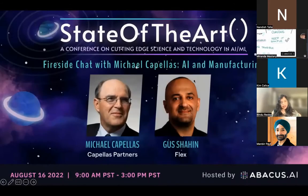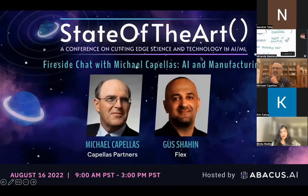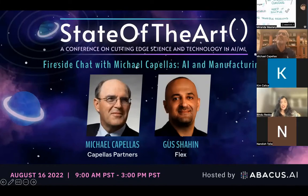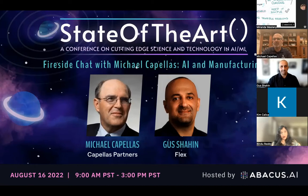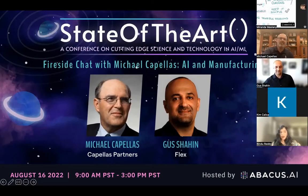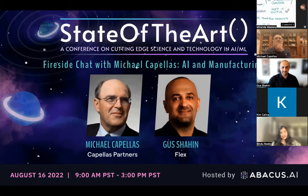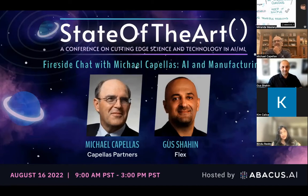Our next session is a topic I am super excited about — we're going to focus on AI in manufacturing and supply chain. I'd like to introduce both our guests. I'll start with Gus, a good friend and mentor, and fundamentally one of the most tech-forward CIOs in the valley. He's the CIO of Flex, one of the largest contract manufacturers in the world — customers include Apple, Google, and Palo Alto Networks.